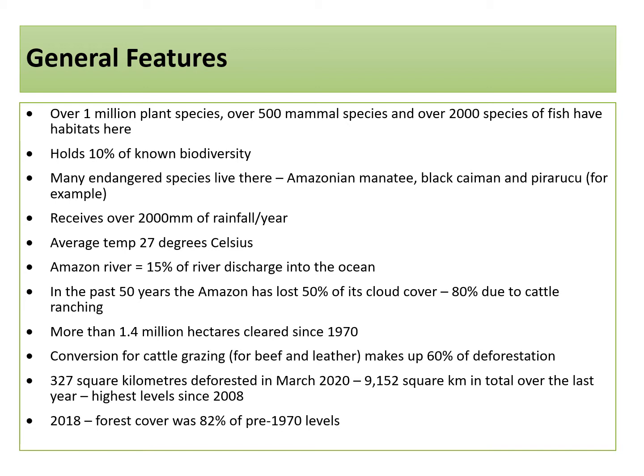The Amazon River accounts for 15% of river discharge into the ocean. However, in the past 50 years the Amazon has lost 50% of its cloud cover, and 80% of this change is due to cattle ranching. More than 1.4 million hectares of forest have been cleared since 1970, and conversion for cattle grazing in order to make beef and leather makes up 60% of deforestation. 327 square kilometres were deforested in March 2020, with 9,152 square kilometres destroyed in total over the past year.